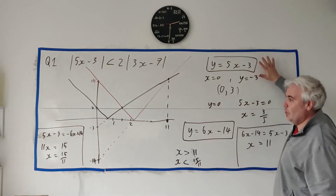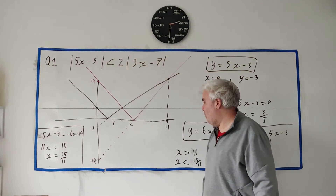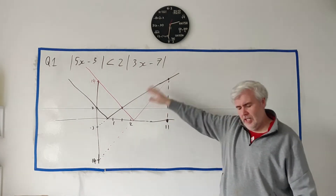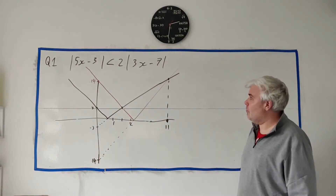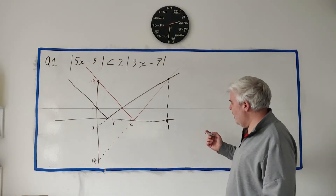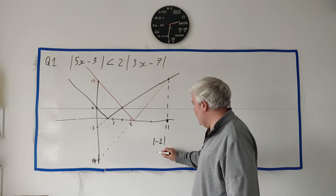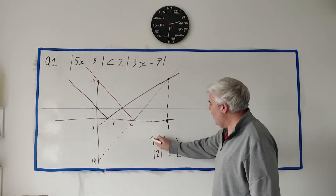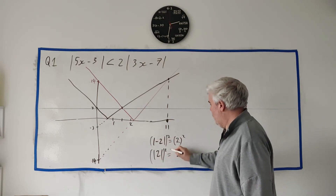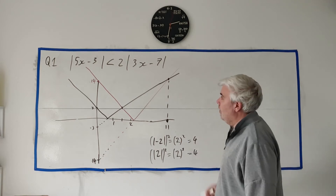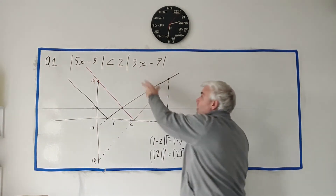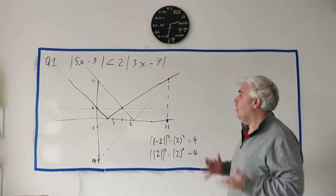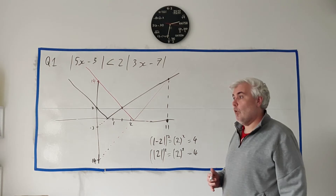Now let me redo this algebraically. We remember that the absolute value of minus 2 and the absolute value of 2 are the same — they both equal 2. So if we square both sides of the inequality, we haven't changed their relative values to each other. That means we can square both sides to get rid of the absolute values: (5x minus 3) squared is less than 2 squared times (3x minus 7) squared.